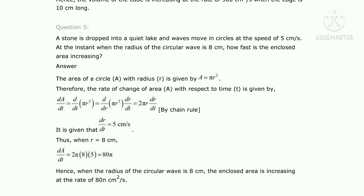We need the rate, so we differentiate this area with respect to time t. So dA/dt = d/dt(πr²). π is a constant term, and differentiating r² with respect to time using the chain rule gives 2r · dr/dt. So finally, dA/dt = 2πr · dr/dt.